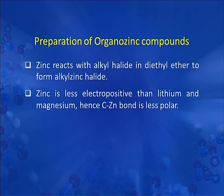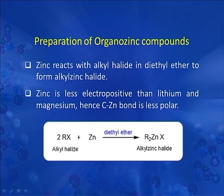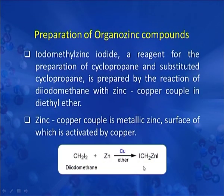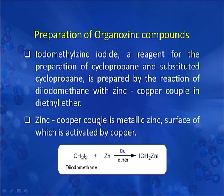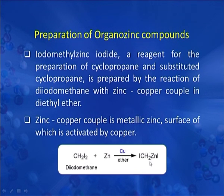For the preparation of organozinc compounds, zinc reacts with an alkyl halide in diethyl ether to form an alkyl zinc halide. Zinc is less electropositive than lithium and magnesium, so the carbon-zinc bond is less polar. Another method involves the reaction of diiodomethane with zinc-copper couple in ether solution. Iodomethyl zinc iodide — a reagent for the preparation of cyclopropane and substituted cyclopropanes — is prepared by this reaction of diiodomethane with zinc-copper couple in diethyl ether.